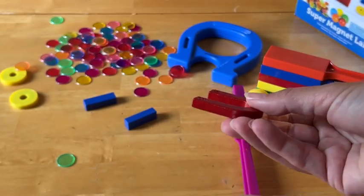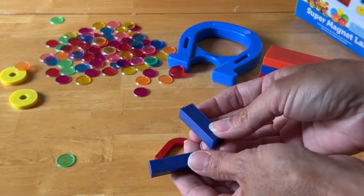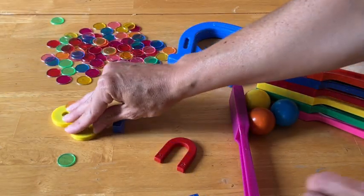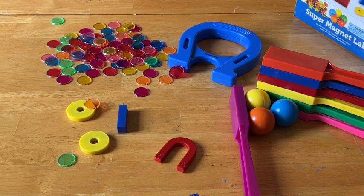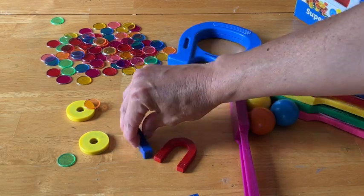It has these magnetics here and then two of these circles. Different activities you can use - you can help the kids learn about the different poles and how they can move and repel.